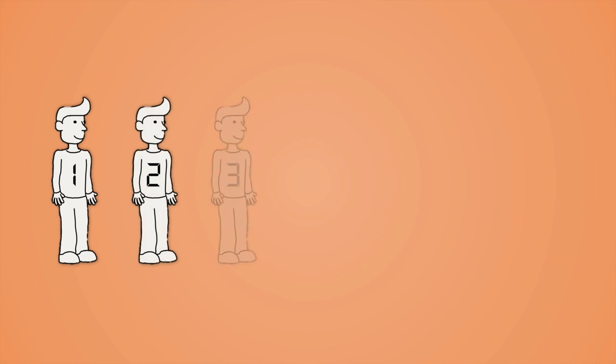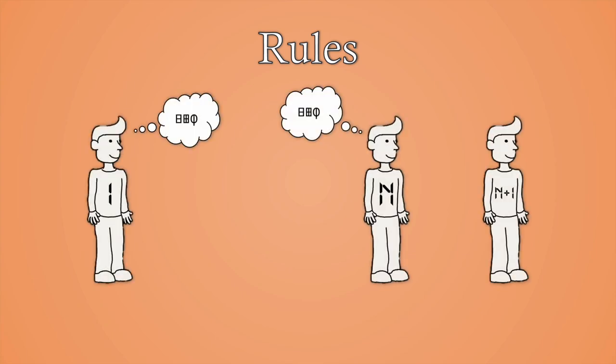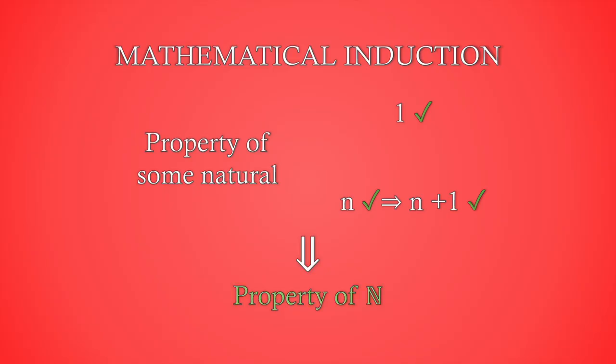Consider an infinite row of people, labeled with naturals. The rules for this row is that the first person knows a secret, and if the nth person knows the secret, that person will tell his successor. The property of naturals that we want to check is that every corresponding person will know the secret. With these rules, we see that number 1 satisfies the property, and given that the nth person knows the secret, as it is told to the successor, this one now knows the secret. So given that n satisfies, n plus 1 satisfies. This is sufficient to prove that every person in the row will know the secret, as we have proven that this is a property of all naturals.